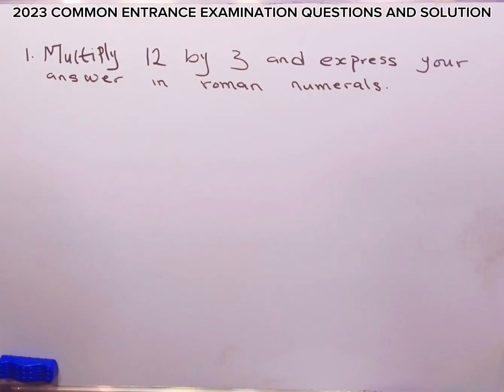The first question is: multiply 12 by 3 and express your answer in Roman numerals.